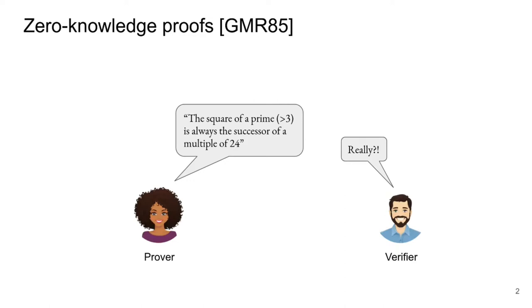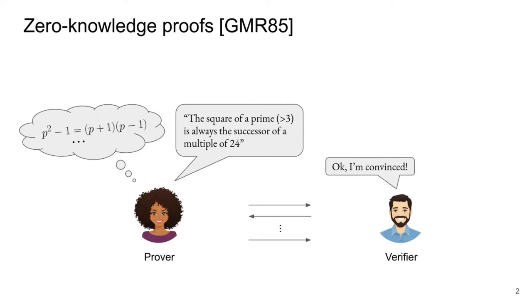They allow a party called Prover to convince a possibly skeptical verifier of the validity of a certain mathematical theorem. The Prover has a proof of the theorem, but she does not want to share it with the verifier. Instead, she wants to convince him of the validity of the statement without revealing any information about her proof. A zero-knowledge proof system is essentially a protocol that allows them to achieve this goal. After exchanging a few messages, the verifier will be convinced about the validity of the statement or even about the fact that the prover knows a proof, but will have not learned anything in this process.